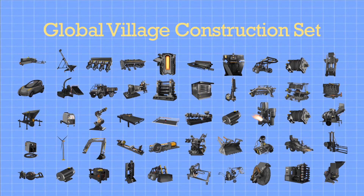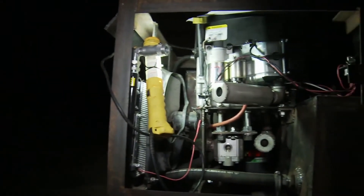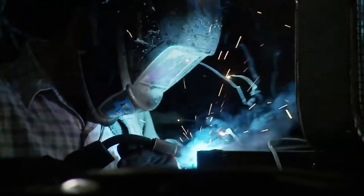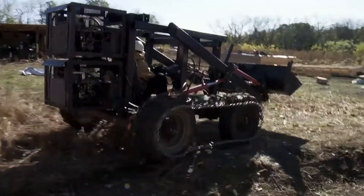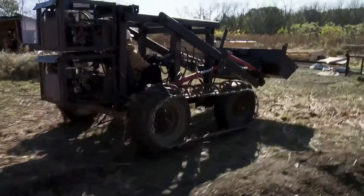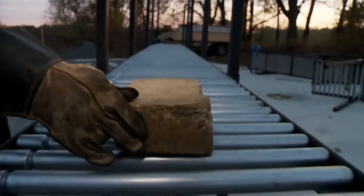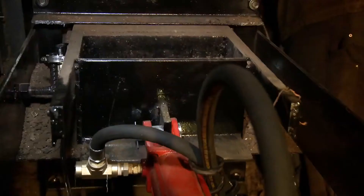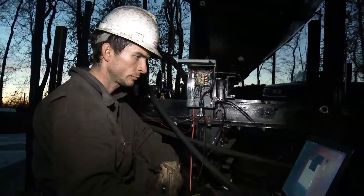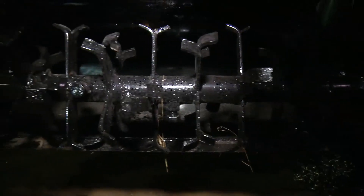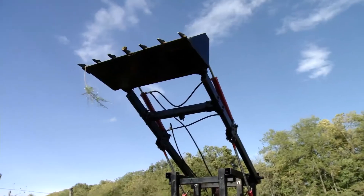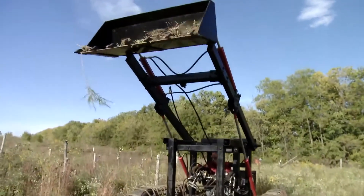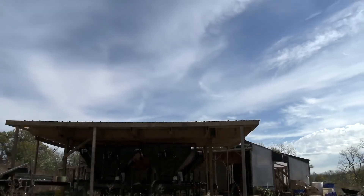We're developing the Global Village Construction Set as a means to show that we can create a real community based on these technologies and achieve post-scarcity. The Global Village Construction Set is a set of 50 different industrial machines that allow for the easy fabrication of all the different products that it takes to create a small civilization with modern comforts — everything from a tractor to an oven to a circuit maker.